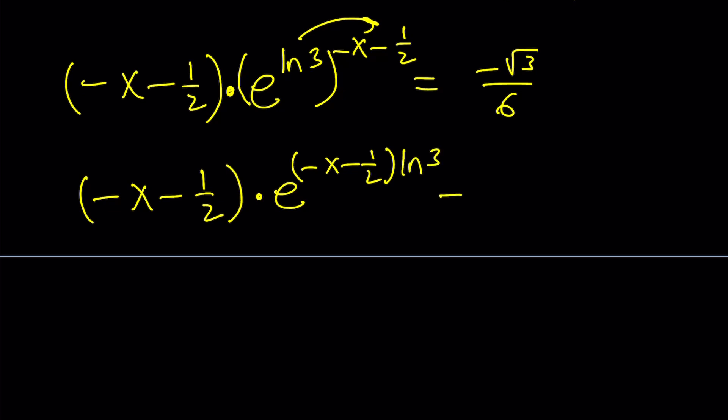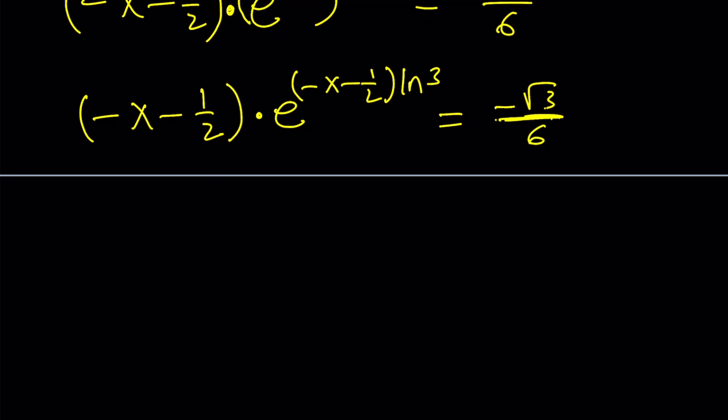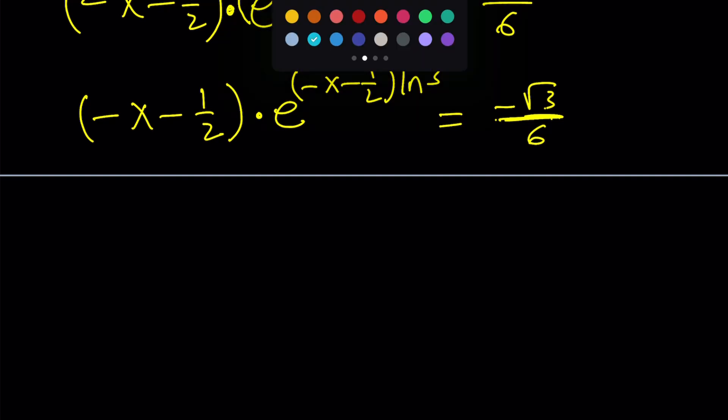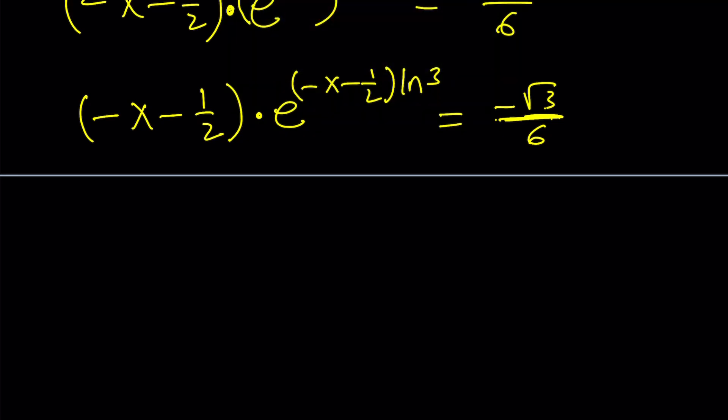Cool. Now, we still have negative root 3 over 6 on the right-hand side. And what are we going to do with this? So, here's what we need to do next. Sometimes, the pen will just act up. I guess, static, electricity, whatever. And here's what we need. And we wanted to bring it into a form that looks like t e to the t. And I'm going to apply a very special function on this. Did you guess what it is? Yes.